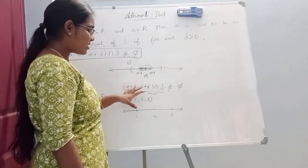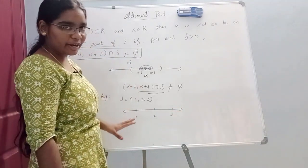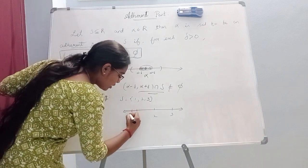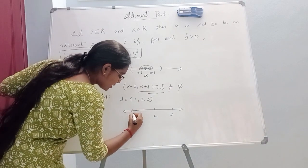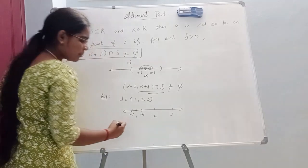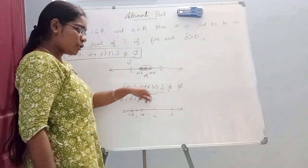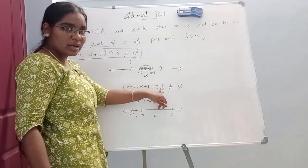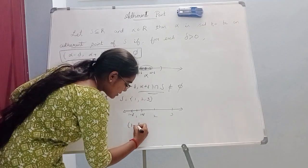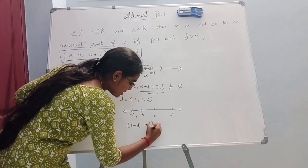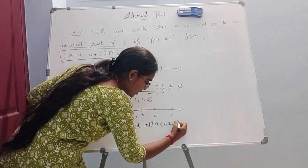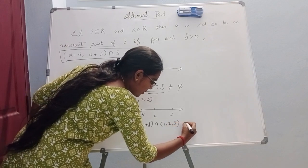First condition: we will find the neighborhood. Let's check point 1. Here, 1 minus delta and 1 plus delta. Now we find the neighborhood and intersect with S. So that's (1 minus delta, 1 plus delta) intersect with S, which is {1, 2, 3}.